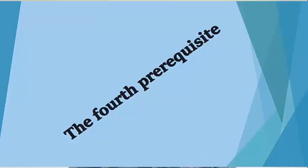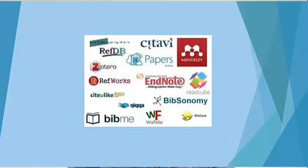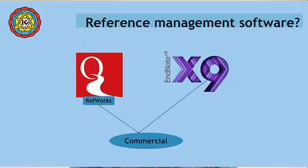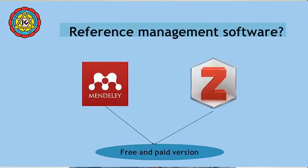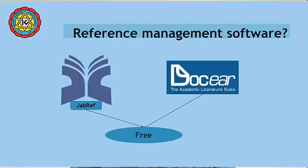The fourth prerequisite is reference management software. There are numerous options. Softwares like RefWorks and EndNote are not freely available, whereas Mendeley and Zotero are free up to a certain capacity. Softwares like JabRef and Docear are completely free. You can select reference management software based on availability and user-friendliness.